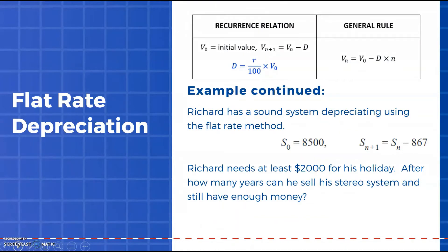Looking at examples of when we would convert to a general rule, again it's that judgment that you need to make about whether I'm being asked to solve for n and does it feel like it's going to be quite a number of iterations of the rule. From here Richard has the same information as before, his sound system and our recurrence relation. He needs at least two thousand dollars for his holiday, so after how many years can he sell his stereo system and still have enough money. Effectively we want to know how many years or iterations of the rule until the value drops below two thousand.